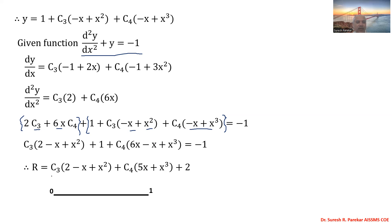In the collocation method, the domain is [0,1] and we have 2 unknowns, c3 and c4, so we need 2 collocation points. We choose the Gauss points x = 1/3 and x = 2/3. We set the residue R(1/3) = 0 and R(2/3) = 0 to obtain two equations.